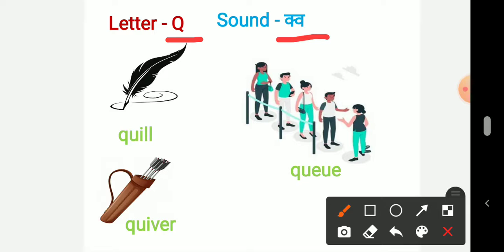The first picture is about Quill. Q-U-I-L-L Quill. This is line of people, so it is called Queue. Q-U-E-U-E Queue.